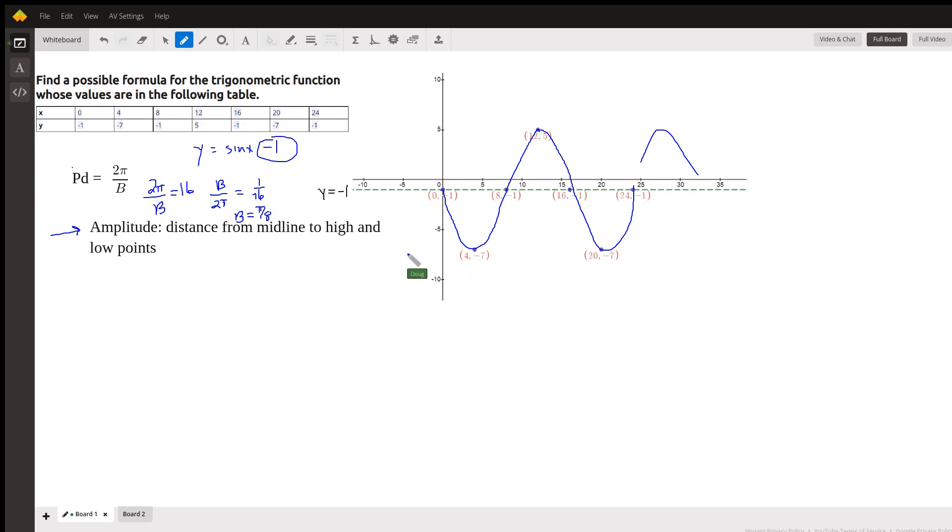...except we're reflecting this. The normal sine function, you know, starts like this, so we need a negative in front. So I think the equation probably looks like this: six is the amplitude, but we want to reflect over the midline.